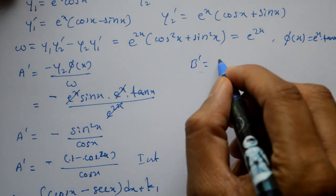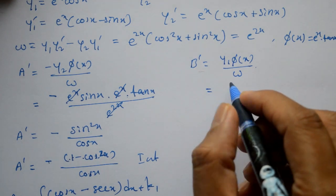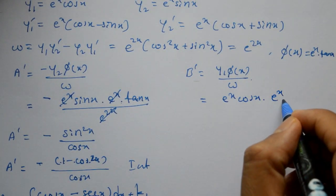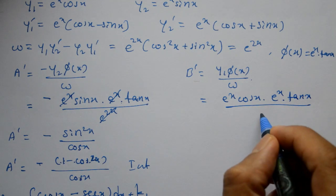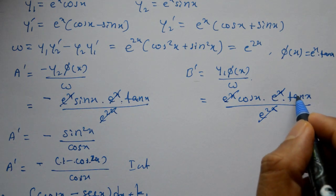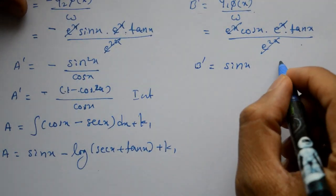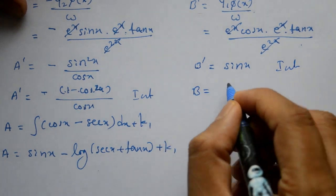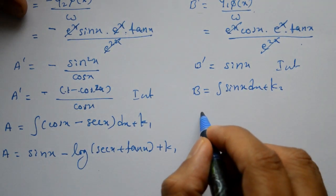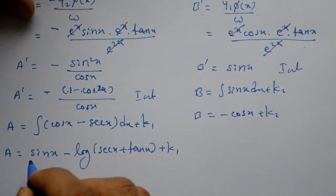Now finding b: b' equals y1·phi(x) divided by W. Substituting y1 equals e^x·cos x, phi(x) equals e^x·tan x, divided by W equals e^(2x): the e^(2x) cancels. Then tan x times cos x gives sin x, so b' equals sin x. Integrating: b equals minus cos x plus k2.